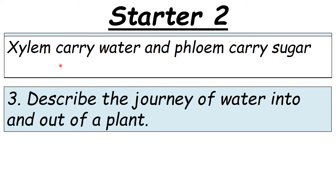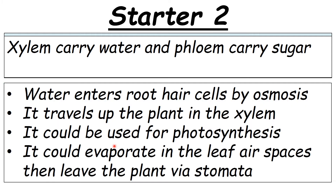The two structures are xylem — they carry water, contain lignin, and are just dead hollow tubes — and phloem, which carries sugar. For the journey of water: it first enters the root hair cells by osmosis, then travels up the plant in the xylem. It can be used for photosynthesis, or if there's excess it may evaporate in the air spaces and leave the plant via the stomata — this process is called transpiration.